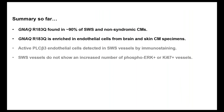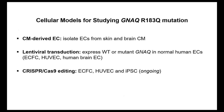To summarize what we know so far: from the literature, the GNAQ R183Q mutation is found in ~90% of Sturge-Weber brain and non-syndromic capillary malformations. The mutation is enriched in endothelial cells from both brain and skin CMs — these are published findings. Our newer unpublished findings show active phospholipase C beta-3 in endothelial cells of Sturge-Weber brain vessels by immunostaining, and that Sturge-Weber sections do not show an increased number of phospho-ERK or Ki67-positive vessels — they are not proliferative lesions.